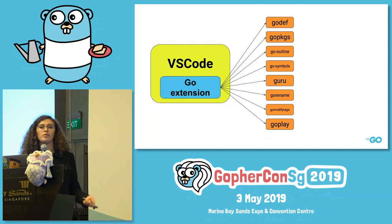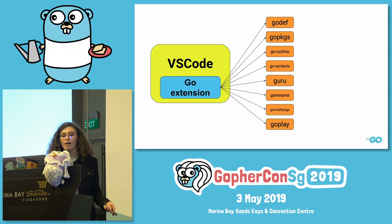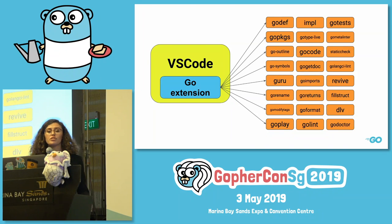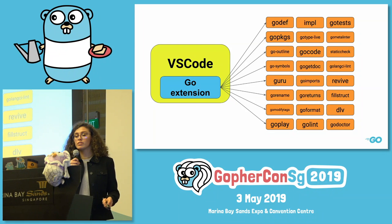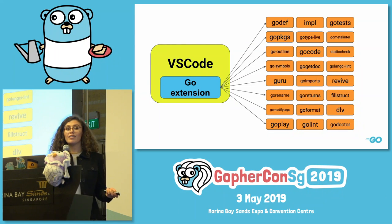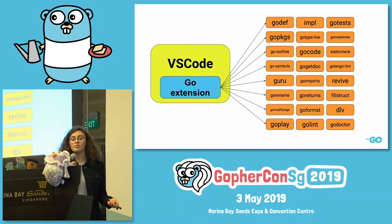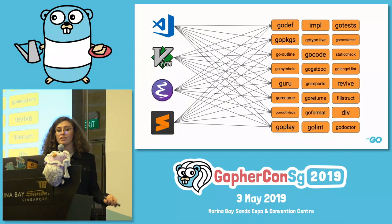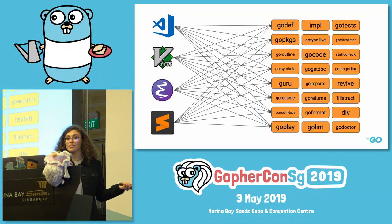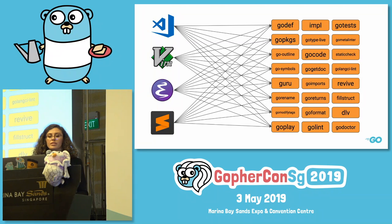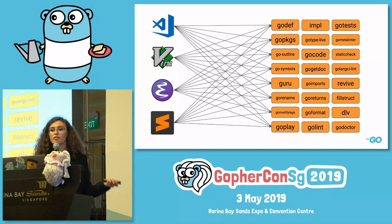This becomes a lot more confusing when you think about how many different features VS Code actually has to provide. Every feature is provided by a different Go tool, every Go tool has its own command line interface and its own input and output format, and every tool is maintained by a different person — or by no one. When you install the VS Code extension for Go, you also install 24 different Go tools. That's why it's so confusing and unmanageable. To solve this problem, we need to make it easier for editors to provide useful features to users.